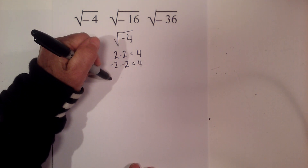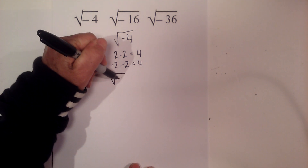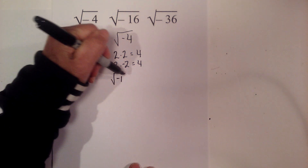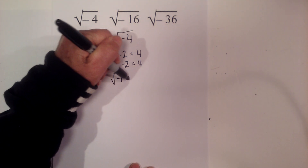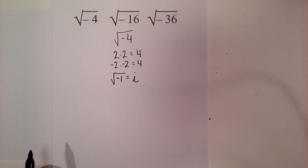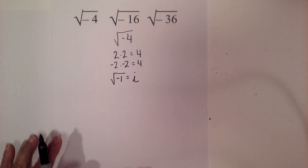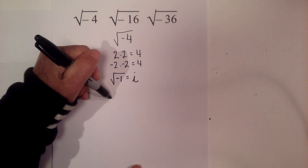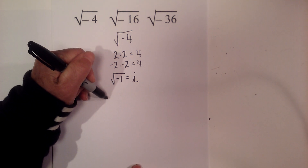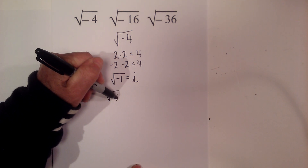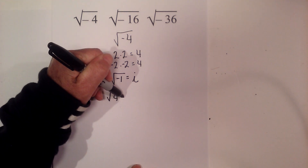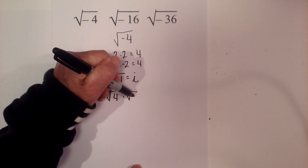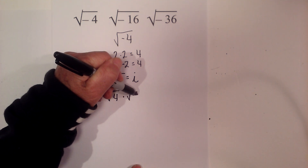There's a workaround: the square root of negative 1 equals i, an imaginary number, because it really doesn't have a real value. So you can rewrite the square root of negative 4 as the square root of 4 times the square root of negative 1.